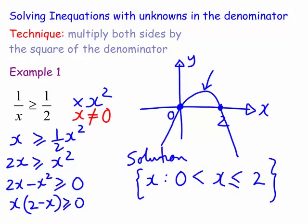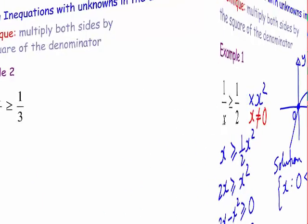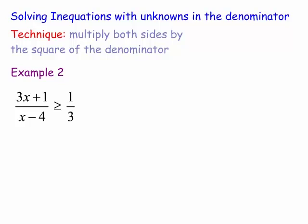Okay let's look at a harder example. Okay here we have the harder example. You can see here (3x+1)/(x-4) is greater than or equal to 1/3. Now a lot of people may not be able to see what that sketch looks like. What does y equal (3x+1)/(x-4) equal?